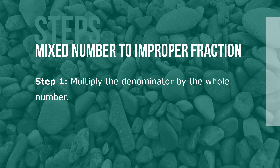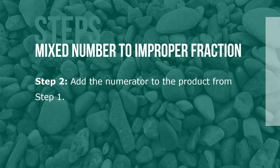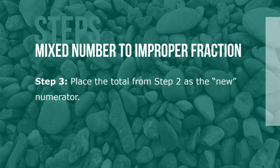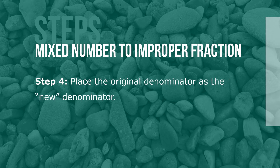Here are the steps for converting mixed numbers to improper fractions. Step 1: Multiply the denominator by the whole number. Step 2: Add the numerator to the product from Step 1. Step 3: Place the total from Step 2 as the new numerator. Step 4: Place the original denominator as the new denominator.